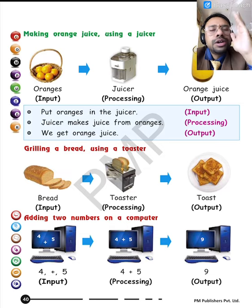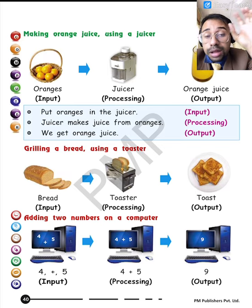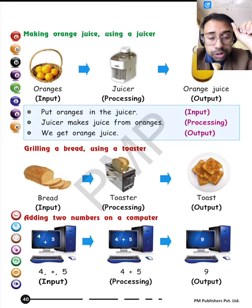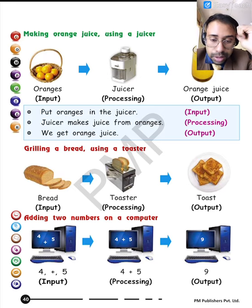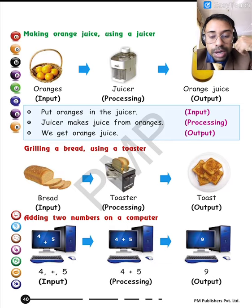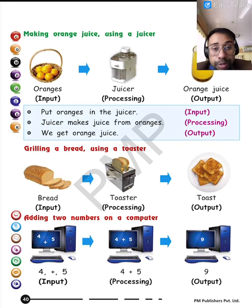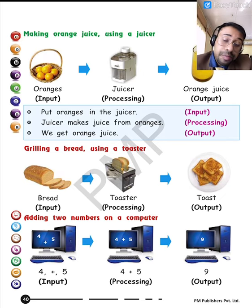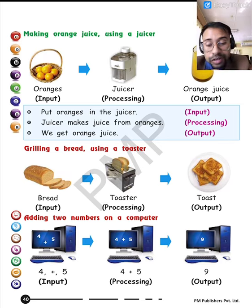Now imagine your toaster. The toaster is the processing device. The input is bread. The bread will be processed — that is, heated and toasted. The output is a bread toast. Similarly, for the computer example I mentioned: the input is 4, 5, and plus. The computer arranges the unorganized data and gives the output as 9.